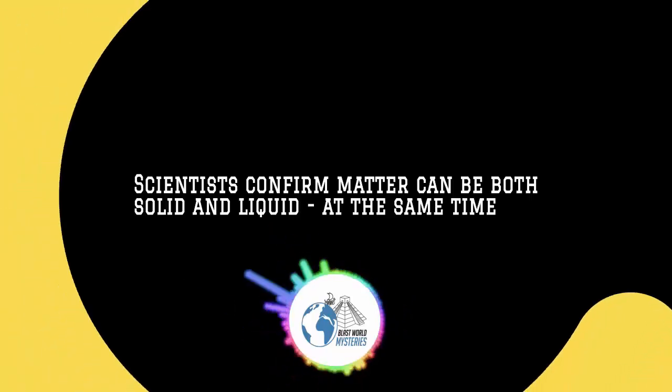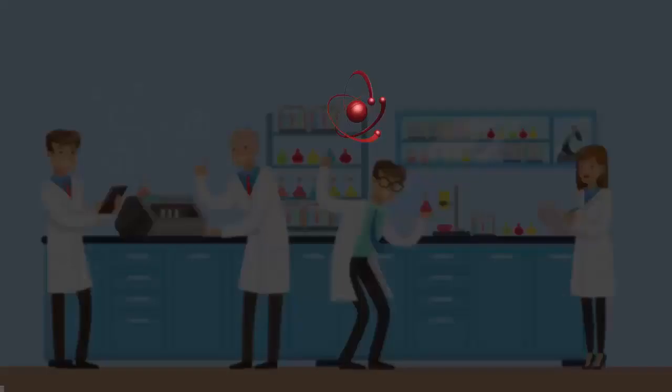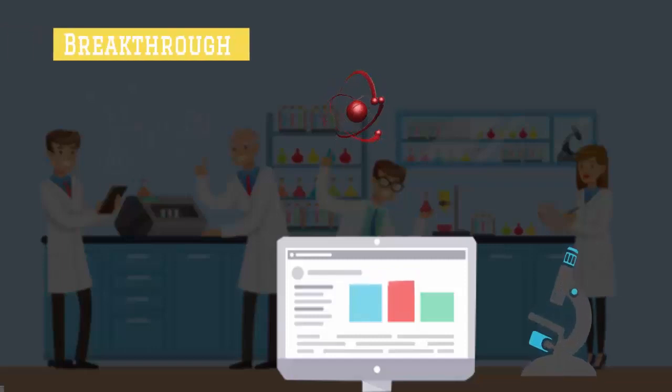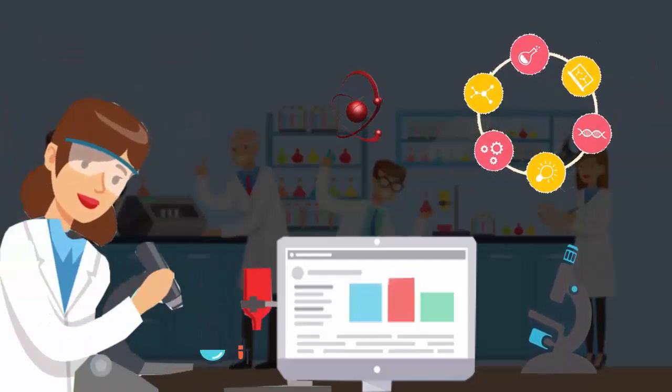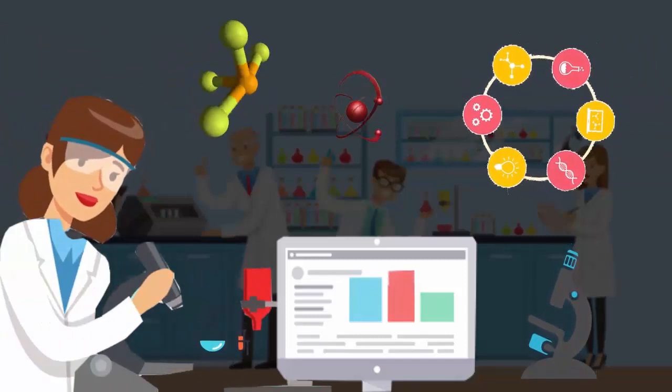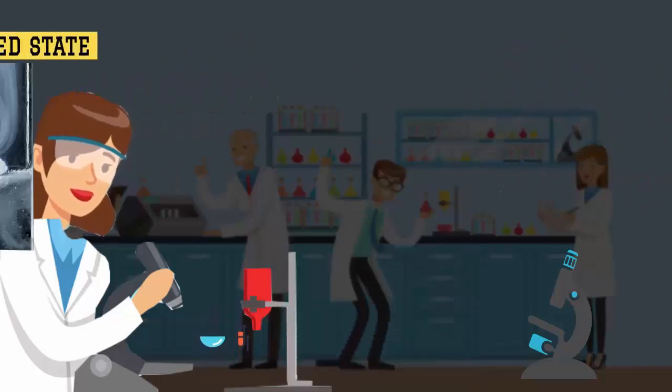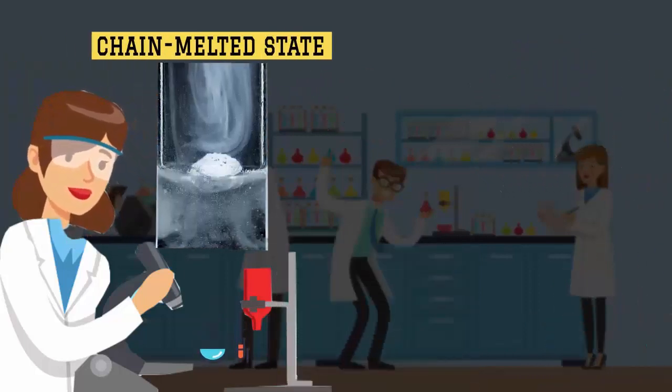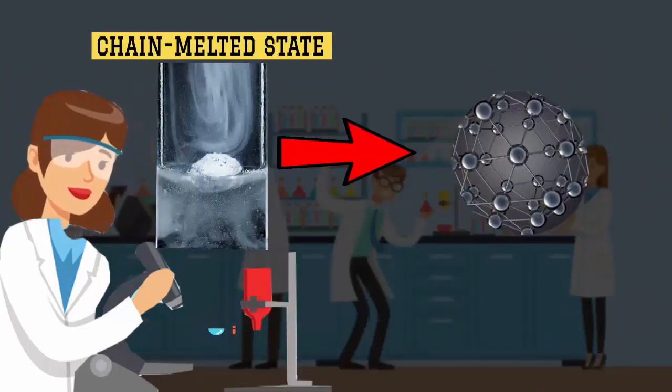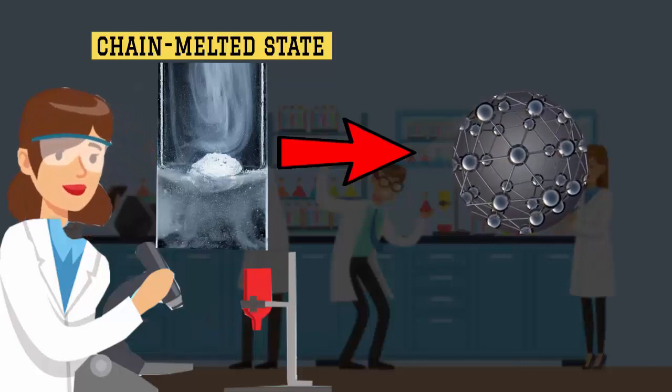Scientists confirm matter can be both solid and liquid at the same time. It's unusual to make breakthroughs regarding the properties and state of matter, but recently, scientists have discovered a new state, referred to as a chain-melted state, that allows materials to be both solid and liquid at the same time.